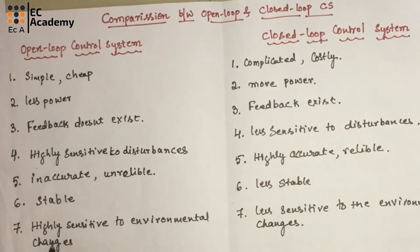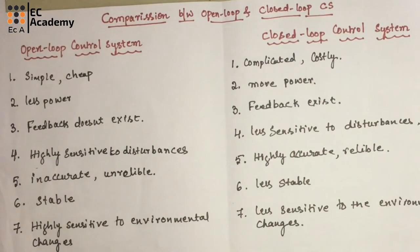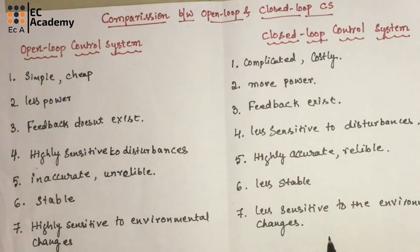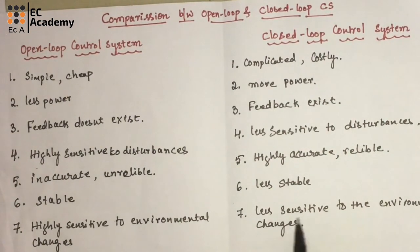Open loop control systems are highly sensitive to environmental changes, meaning the output is affected by any change in system parameters. In comparison, closed loop control systems are less sensitive to environmental changes — the output is not severely affected by changes in system parameters.